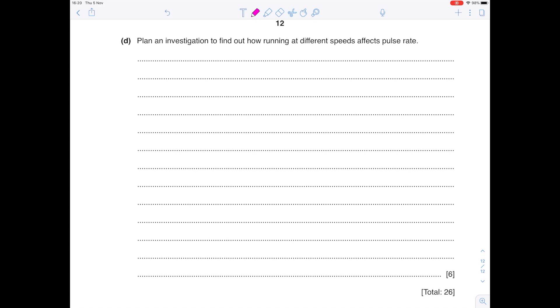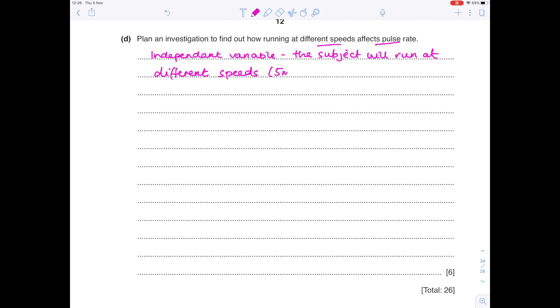Plan an investigation to find out how running at different speeds affects pulse rate. So you know I like to use the variables layout if you've been following me for a while. So we're going to have to list our independent variable. Sorry, my handwriting is terrible because I'm cold. Which is what you're changing. And that's obviously the speed. And then we're going to list our dependent variable, which is what we're measuring. And that's obviously going to be pulse rate. So the independent variable we need to state is that the subject will run at different speeds. And maybe even specify what those would be. Five miles per hour, seven miles per hour, nine miles per hour. What's your dependent variable? So what are you measuring? I will measure the subject's pulse rate before exercise and every minute during exercise. And for five minutes afterwards.